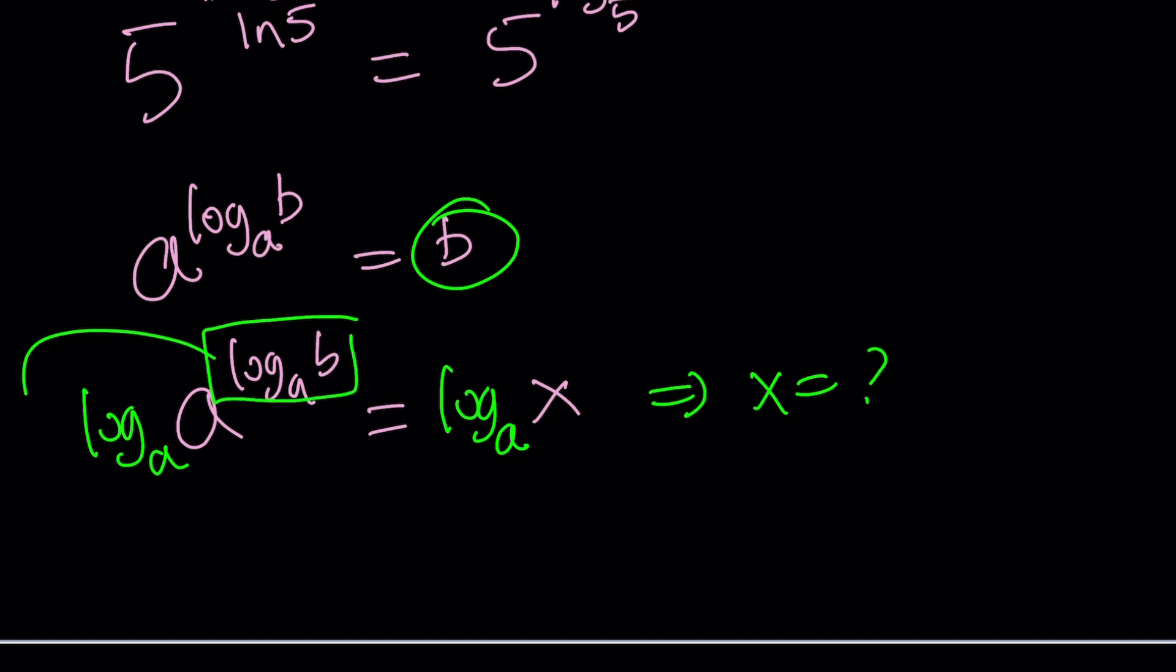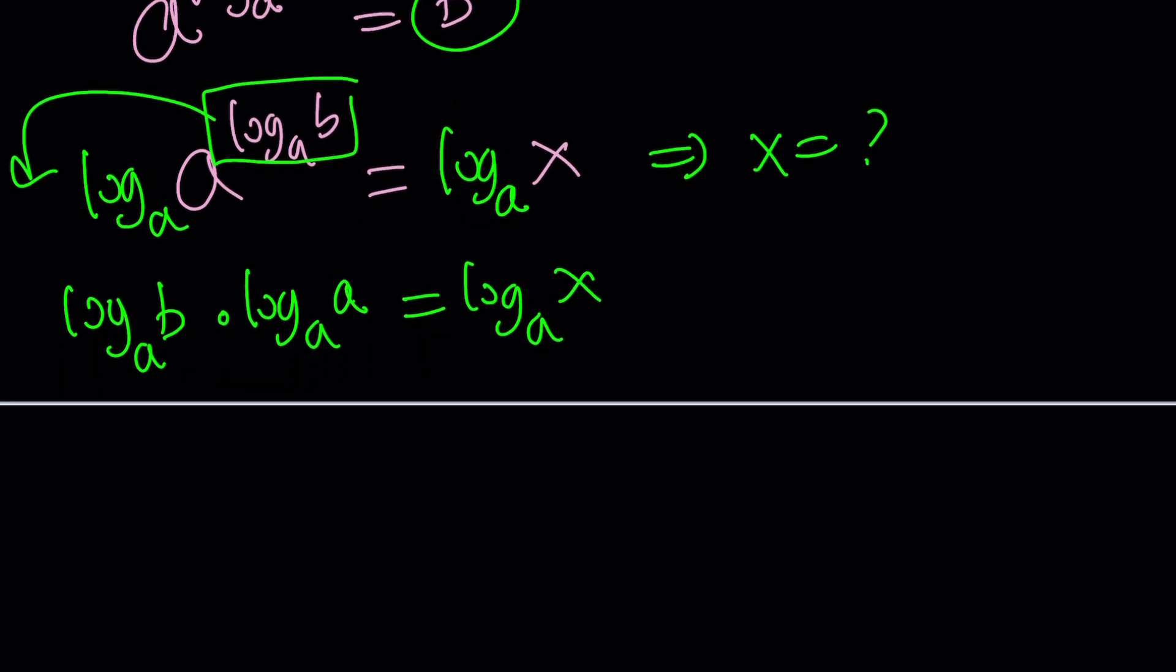We're going to move this to the front. It's going to be log b multiplied by log a, both in base a, and then that's equal to log x with base a. Now, notice that log a with base a is 1 because they are the same. Think about it this way: a to the power 1 equals a. The answer is 1.